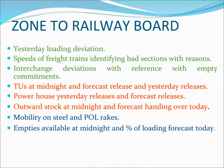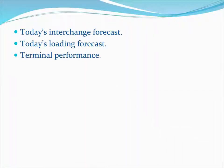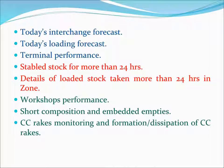Zone to Railway Board reports include: loading deviations; speeds of trains identifying bad sections with reasons; interchange deviations with reference to empty commitments; to-use positions at midnight and forecast release; powerhouse releases and forecast releases; outward stock at midnight and forecast handing over today; mobility on steel and POL rakes; empties available at midnight and percentage of loading forecast today; today's interchange forecast; today's loading forecast; terminal performance; stabled stock for more than 24 hours; details of loaded stock taking more than 24 hours in zone; workshops performance; short compositions and embedded empties; CC-REX monitoring and formation and dissipation of CC-REX.